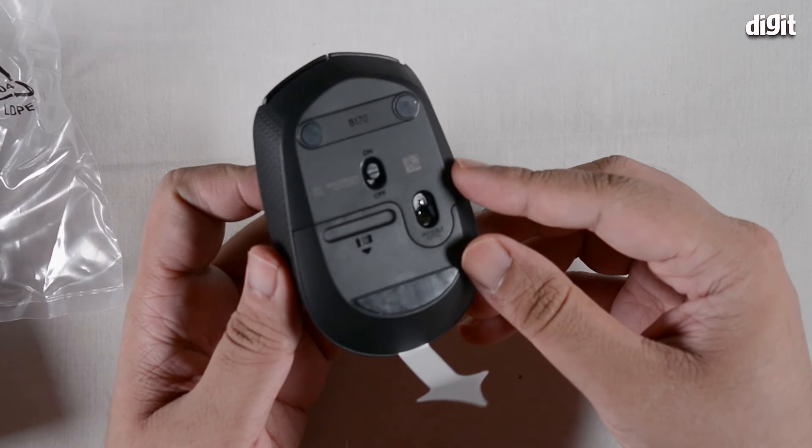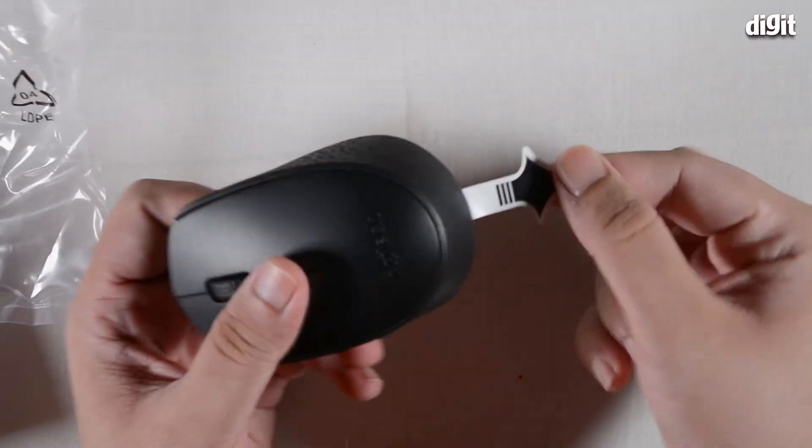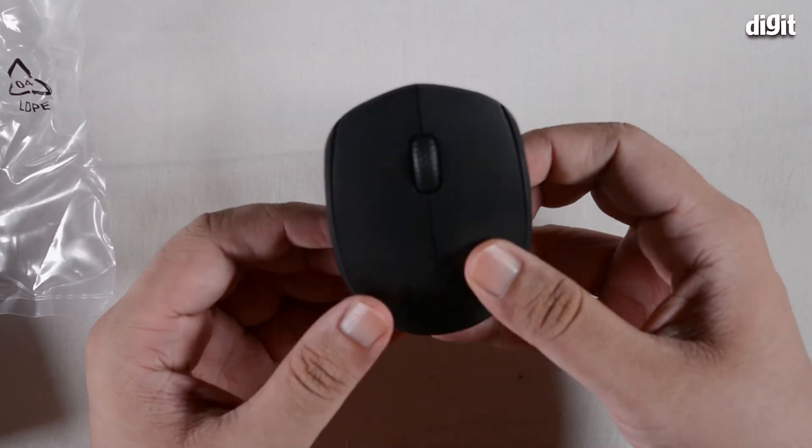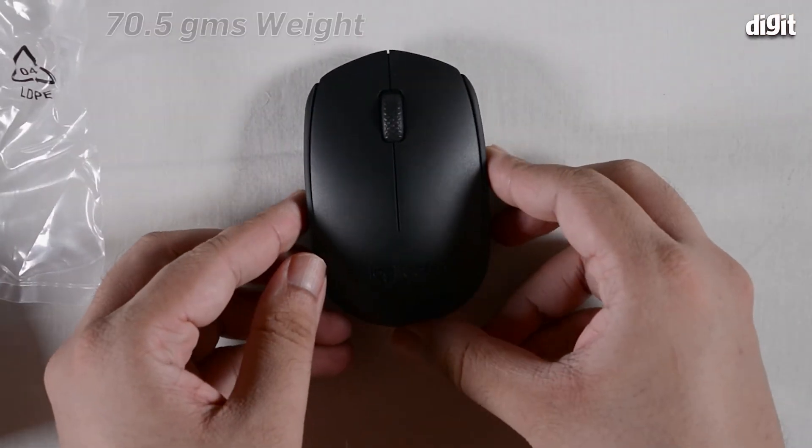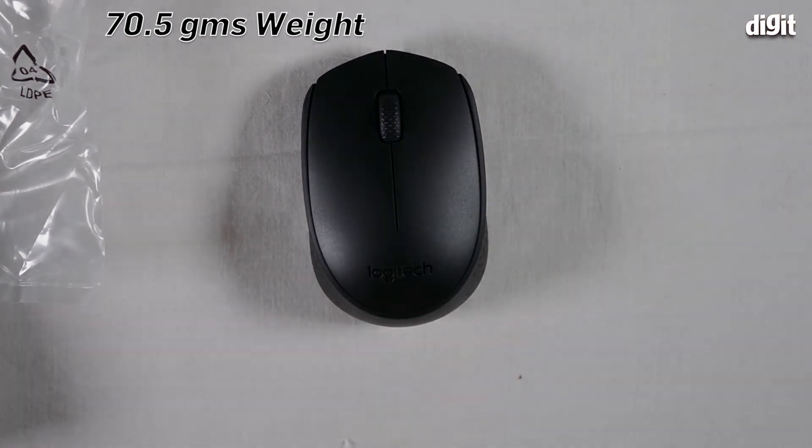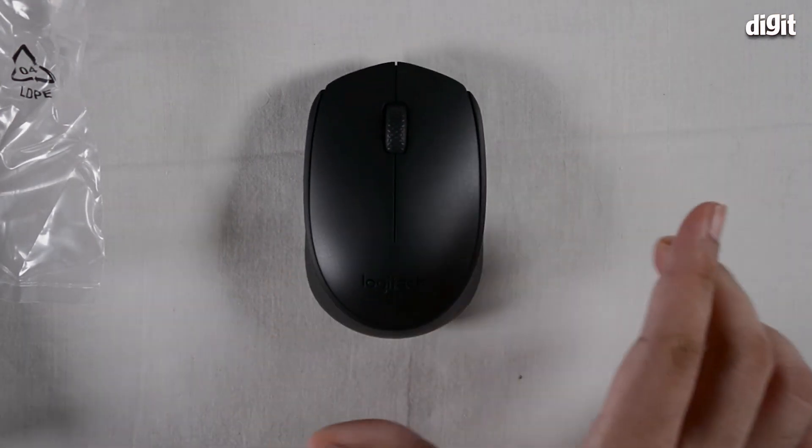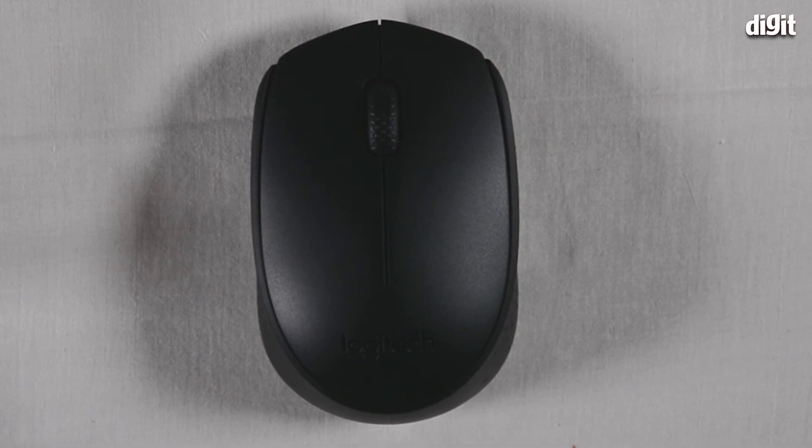You can see the underside has a little tab that you can pull in order to let the battery power the device. So that's about it, this is a fairly simple unboxing of the Logitech B170, it's a wireless USB mouse from Logitech. Thank you for watching.